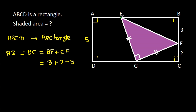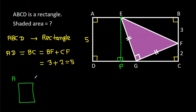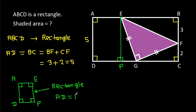From point E, if we make a perpendicular on CD, suppose this point is P. Then in quadrilateral AEPD, three angles are 90 degrees, so this angle will also be 90 degrees — meaning AEPD is a rectangle. Therefore, AD will be equal to EP, and since AD is 5, EP will also be 5.